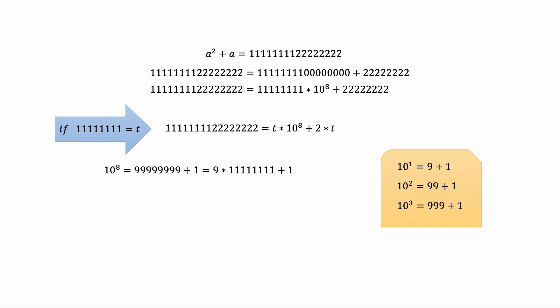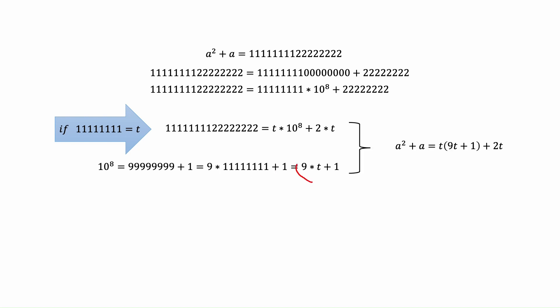Now we want to express the equation in terms of t. Ten to the power eight is nine times eight ones plus one — and eight ones is exactly t — so ten to the power eight equals nine t plus one. Let's substitute this expression nine t plus one in place of ten to the power eight, and now we can write our equation in this new form.